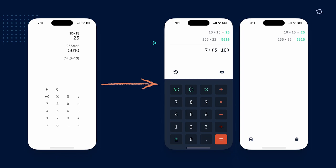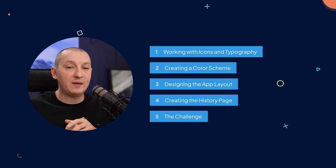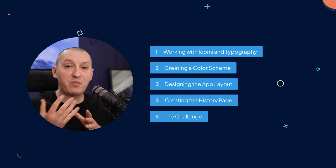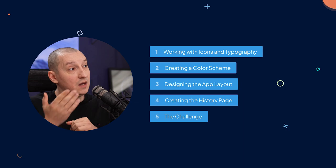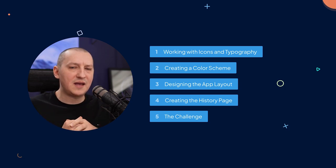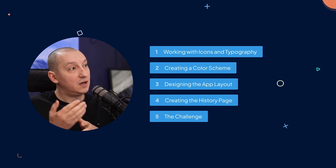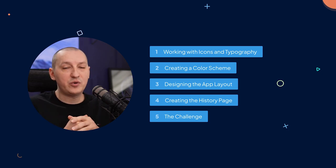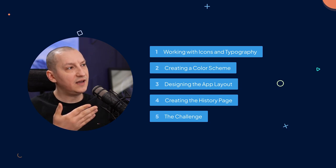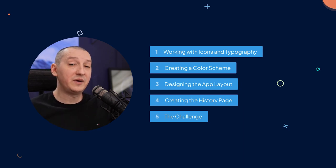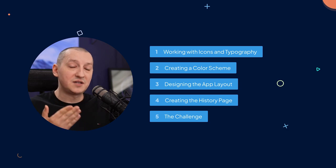We'll start with a simple wireframe and we'll create two pages for it — one for the calculator and one for the history. My name is Adi Burdila. I'm a web designer and developer. We're gonna split this course the following way: first we'll grab the wireframe and change the typography and import some icons. Then we'll create and apply a color scheme, and I'll show you how to easily work with tints and shades. Then we'll design the actual app layout and follow it up with the creation of the history page. And finally, I'll tell you more about a challenge that comes with this course.